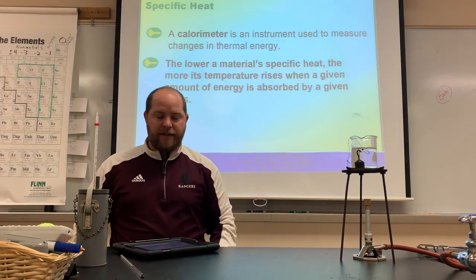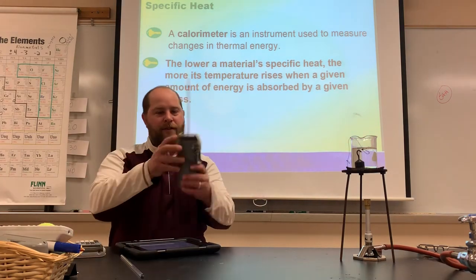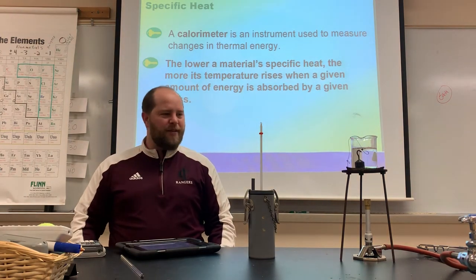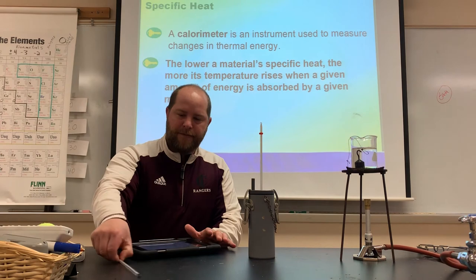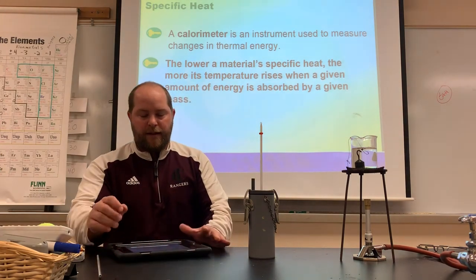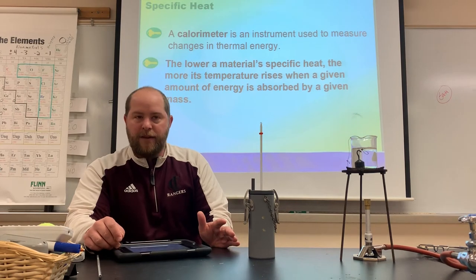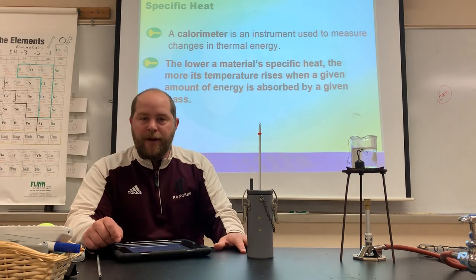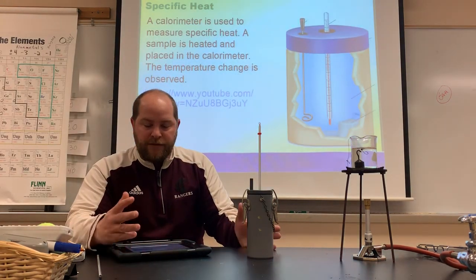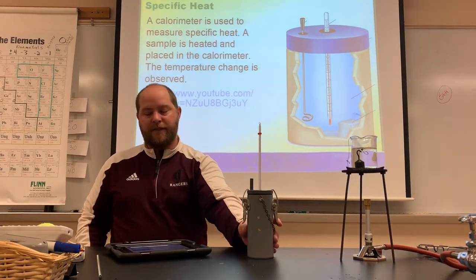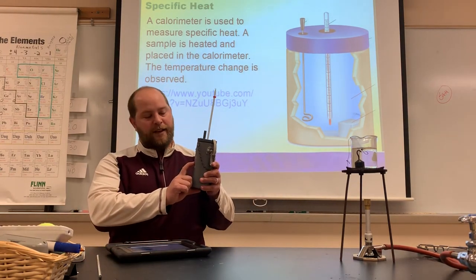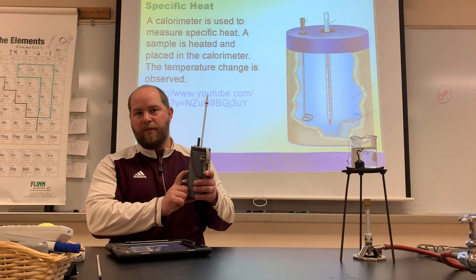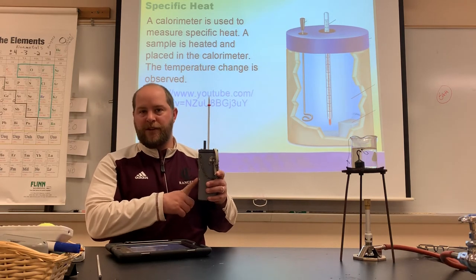Now let's do the calorimeter experiment. I have a simple calorimeter here — it's used to measure changes in thermal energy. Inside, I have 150 milliliters of water, which at a density of 1 gram per milliliter equals 150 grams of water, at an initial temperature of 20 degrees Celsius.